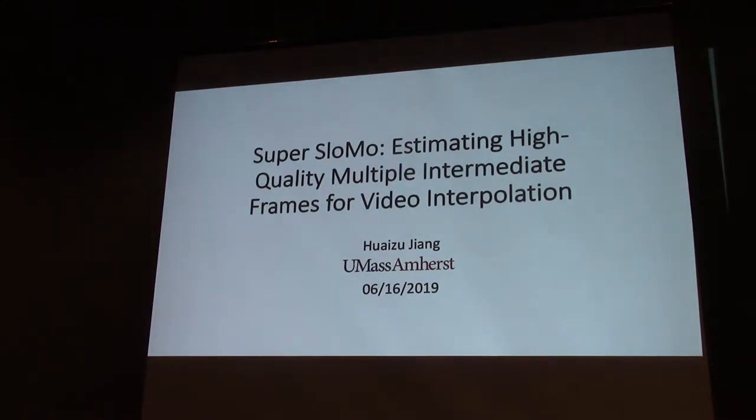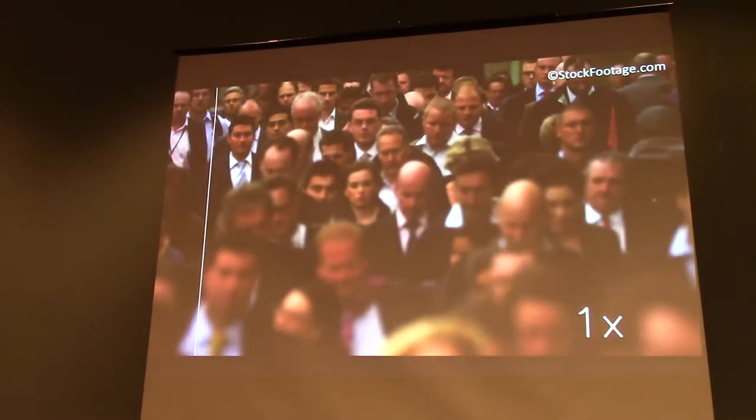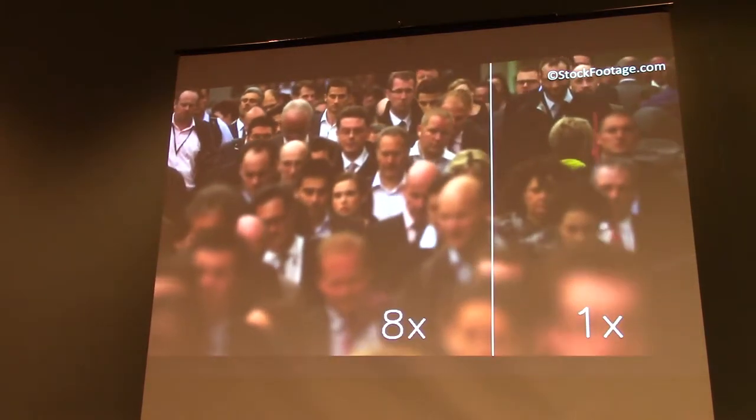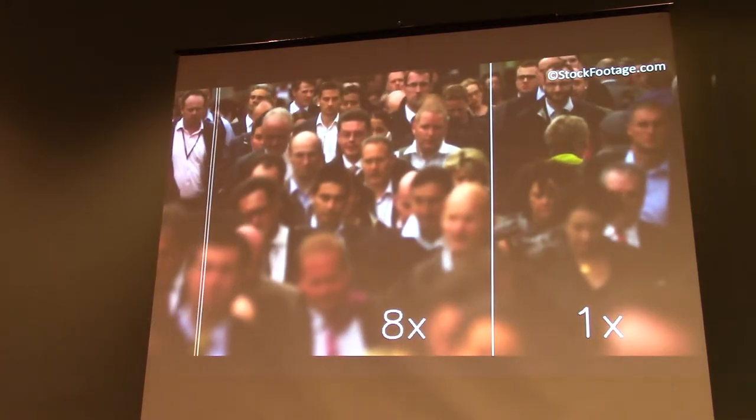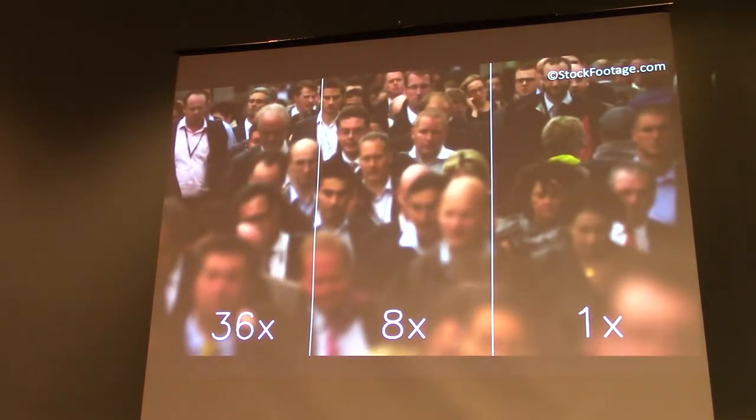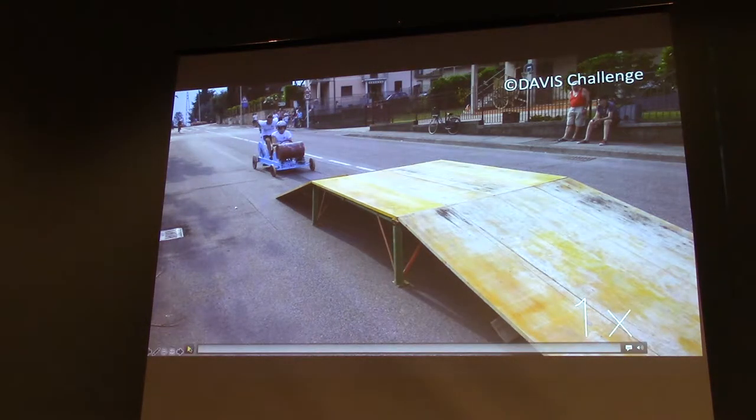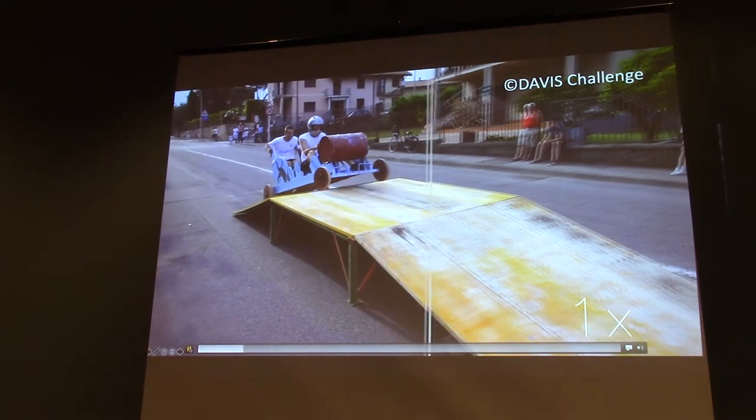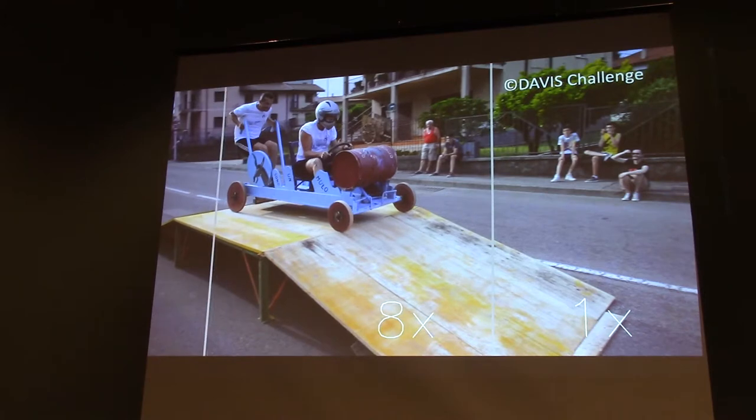Thank you for the nice introduction. I'm honored to be here talking about Super Slow Mo, estimating high quality multiple intermediate frames. I'm going to talk about a different problem - given an input regular video, we're going to convert it into different variants of slow motion videos like 8 times slower or even 36 times slower. Here's another example - this is input and we have 8 times slower and 36 times slower. Super Slow Mo is able to generate good interpolation results.